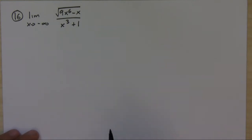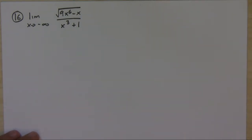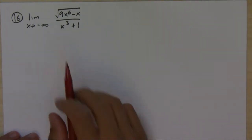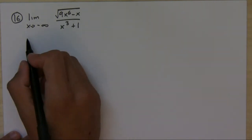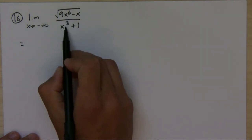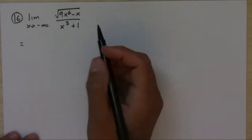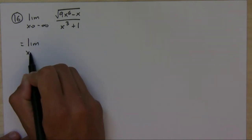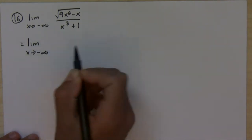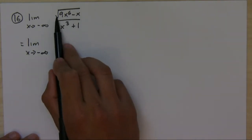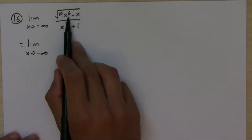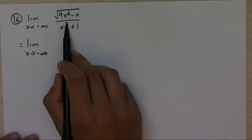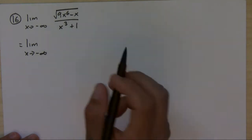This problem is a little trickier than usual. We have a limit to negative infinity with a square root. Our trick remains the same — we look for the highest power and divide numerator and denominator by it. The highest power appears to be six, but because it's inside the square root it's actually six divided by two, which is three. So the powers are the same on the numerator and the denominator.